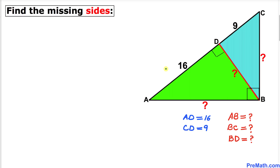Welcome to pre-math. In this tutorial we have a compound shape that consists of a bunch of right triangles, as you can see in the figure, such that line segment AD is 16 units and line segment CD is 9. We are going to find the values of the missing sides AB, BC, and BD.